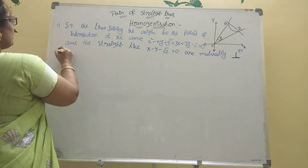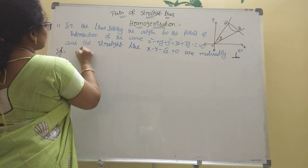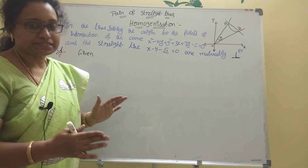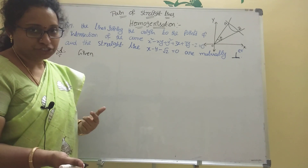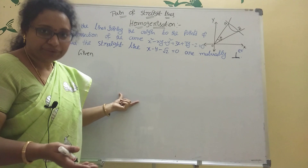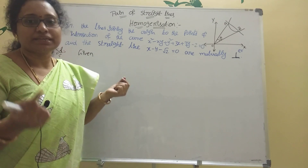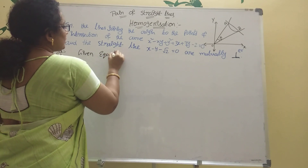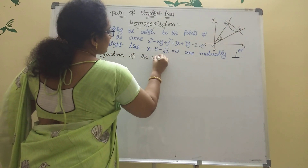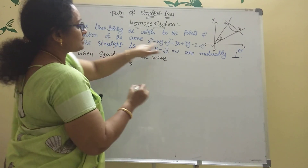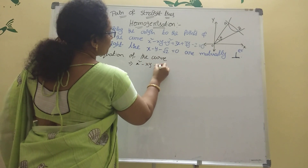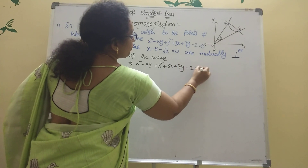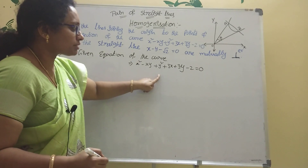Now the first one is the given curve. The solution: given equation of the curve — this is a 7-mark problem. The given equation of the curve is x squared minus xy plus y squared plus 3x plus 3y minus 2 equal to 0.